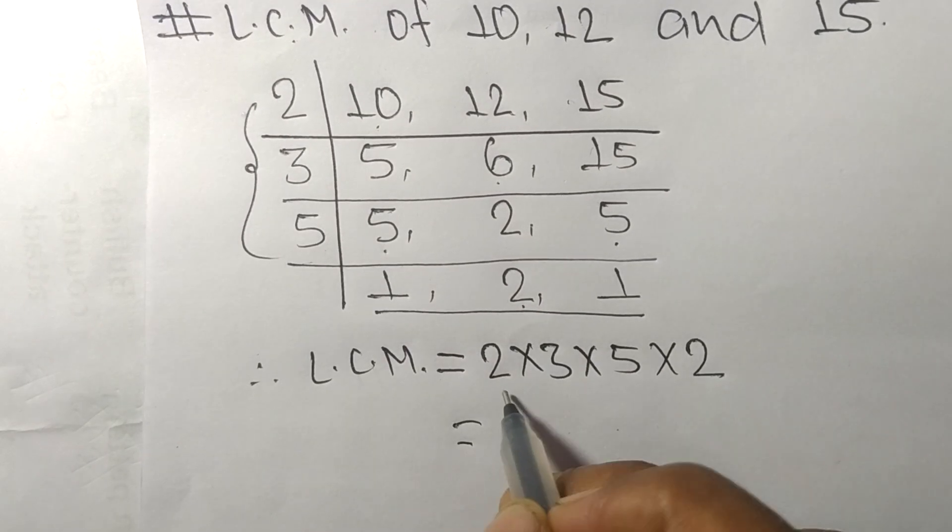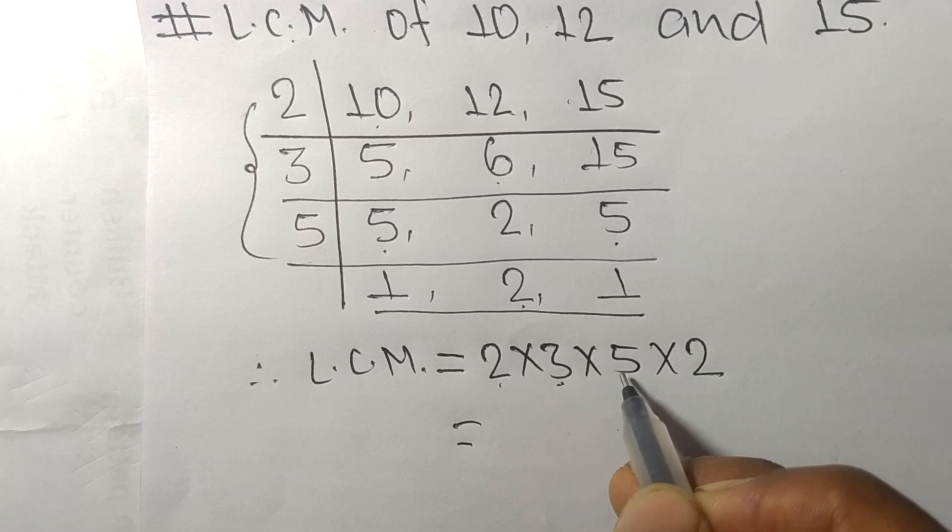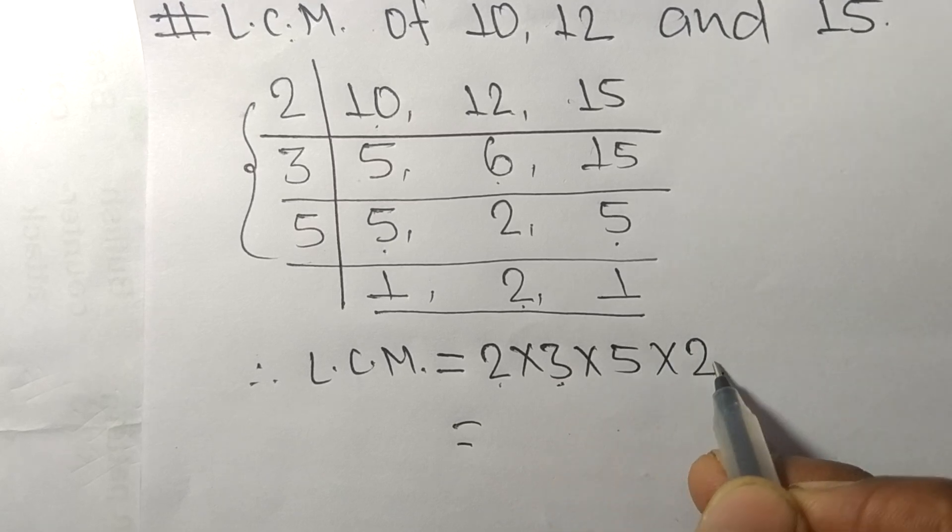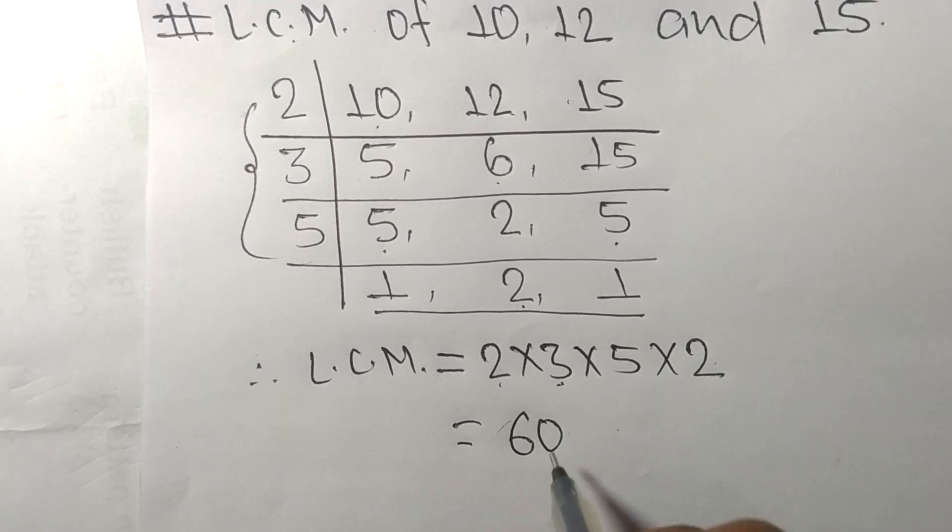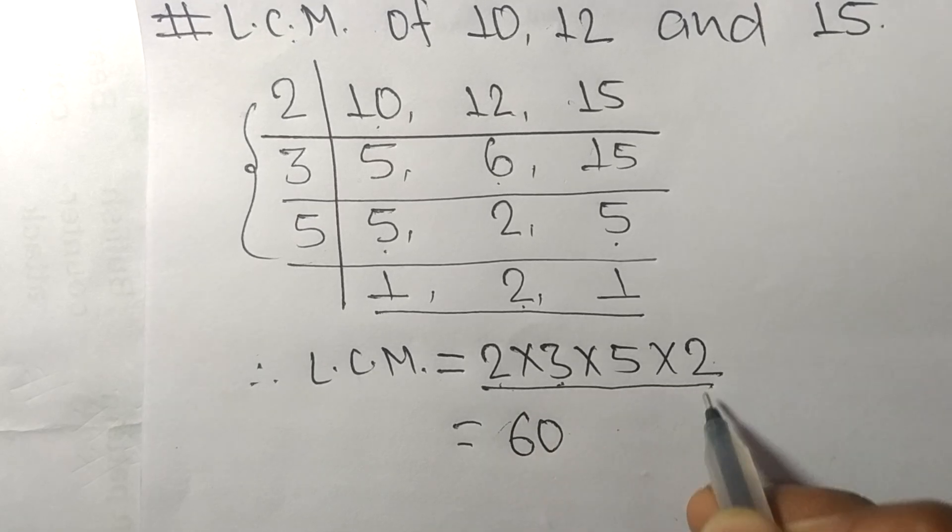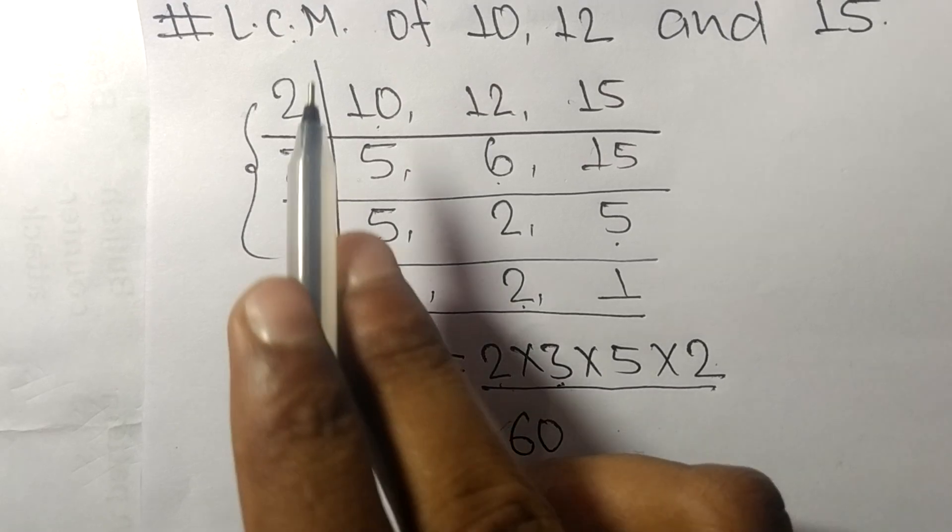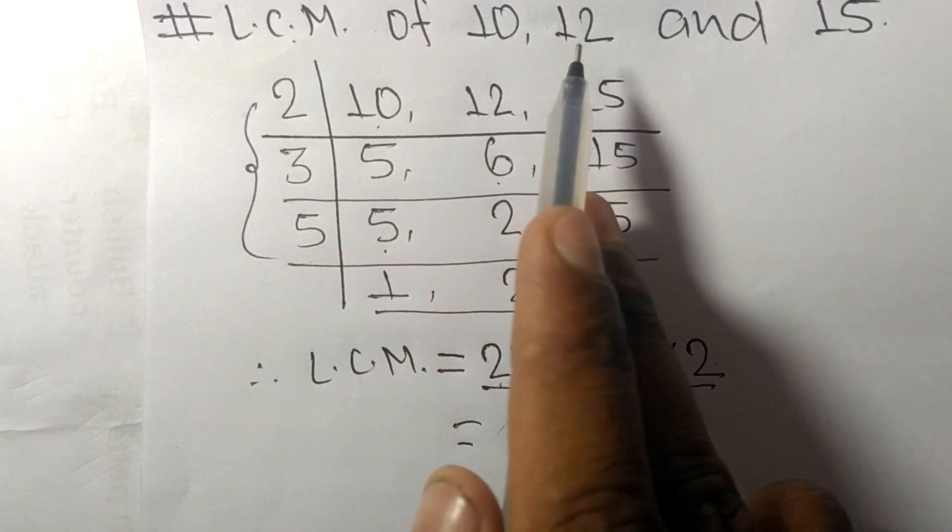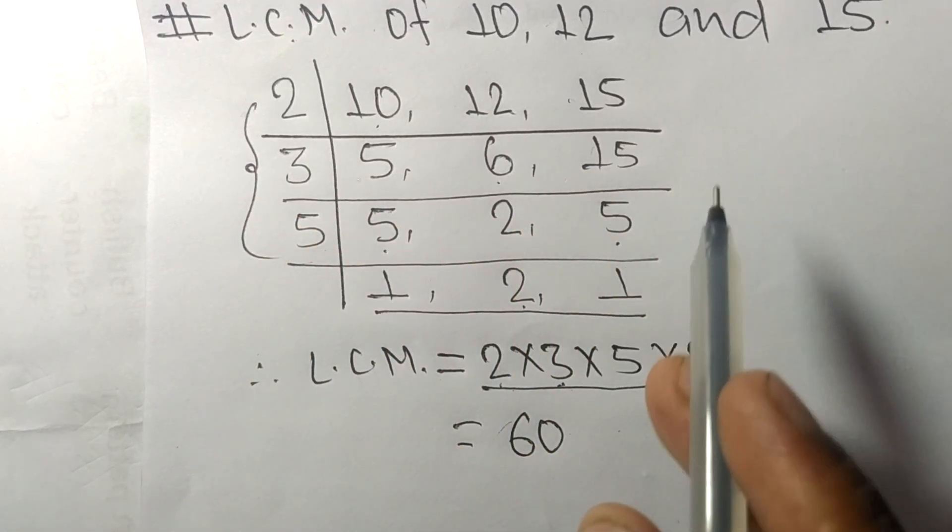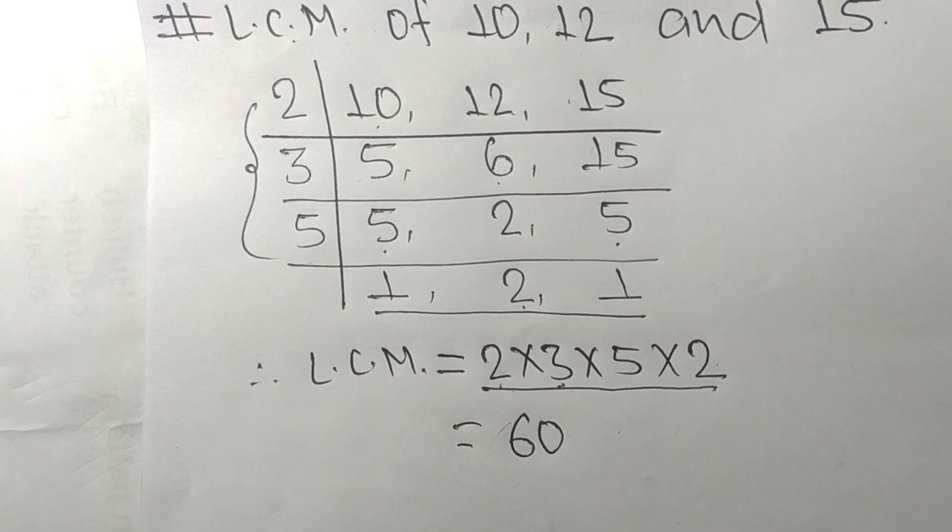So 2 times 3 means 6, 6 times 5 means 30, 30 times 2 means 60. By multiplying all these numbers, we get 60. Therefore, 60 is the LCM of 10, 12, and 15. Thanks for watching.